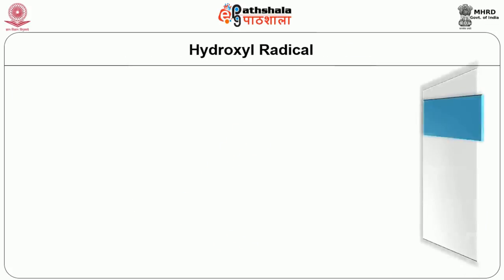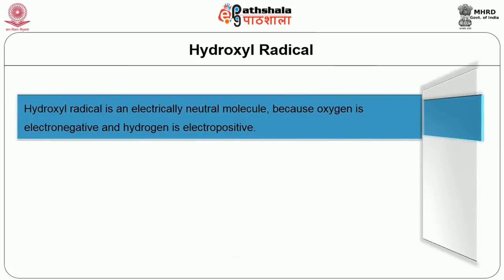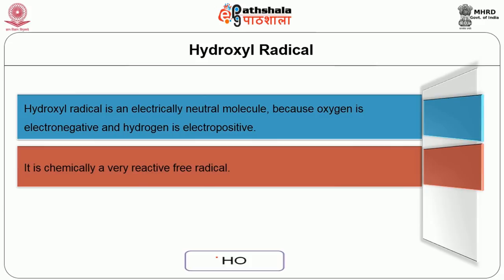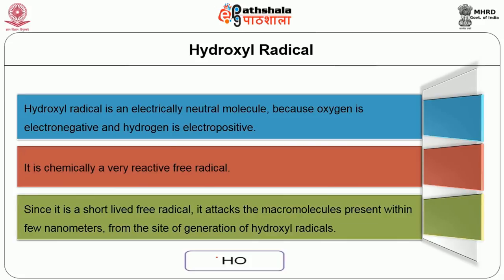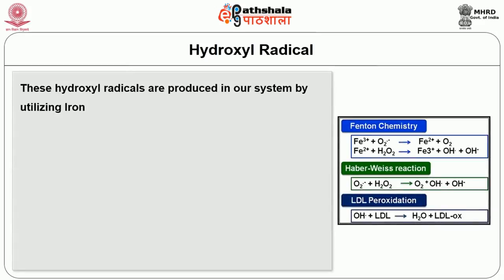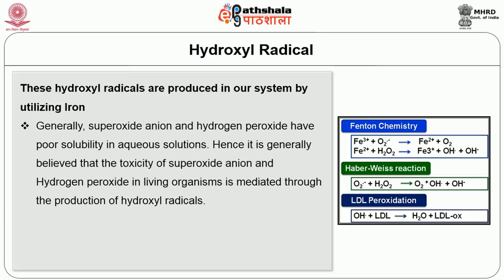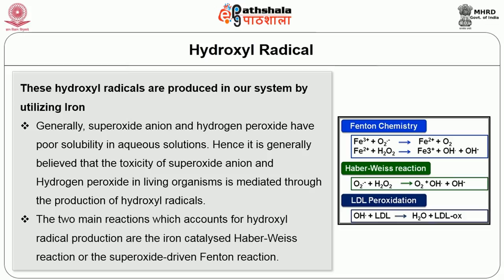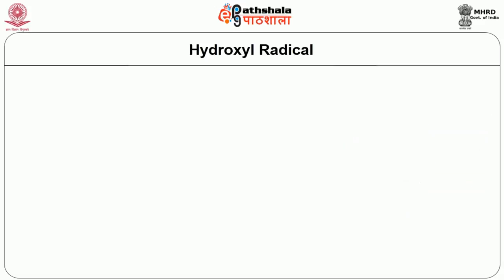First, we will see about hydroxyl radicals. Hydroxyl radical is an electrically neutral molecule because oxygen is electronegative and hydrogen is electropositive. It is chemically a very reactive free radical. Since it is a short-lived free radical, it attacks the macromolecules present within few nanometers from the site of generation. These hydroxyl radicals are produced in our system by utilizing iron. Generally, superoxide anion and hydrogen peroxide have poor solubility in aqueous solutions. Hence, it is generally believed that the toxicity of superoxide anion and hydrogen peroxide in living organisms is mediated through the production of hydroxyl radicals. The two main reactions which account for hydroxyl radical production are the iron-catalyzed Haber-Weiss reaction or the superoxide-driven Fenton reaction.